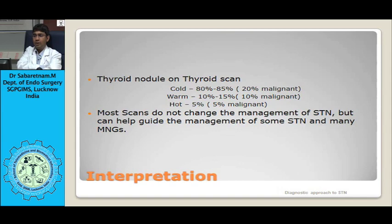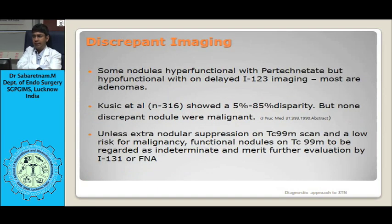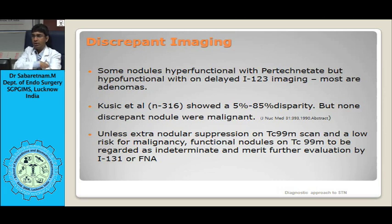For I-123, 400 to 600 microcuries is needed. Its advantages include no beta activity, ability to give higher doses, and imaging at 4 to 6 hours only. Its disadvantages are higher cost and the need for a cyclotron for production.